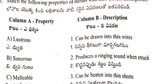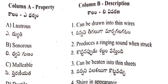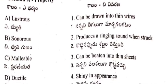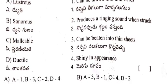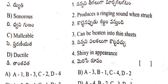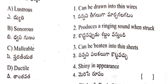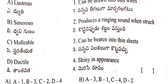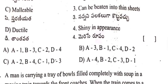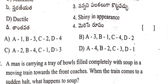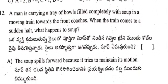Question 11: Match the following properties of metals with their correct descriptions. Terms given: lustrous, sonorous, malleable, ductile — matched with: can be drawn into thin wires, produces a ringing sound when struck, can be beaten into thin sheets, shining appearance.